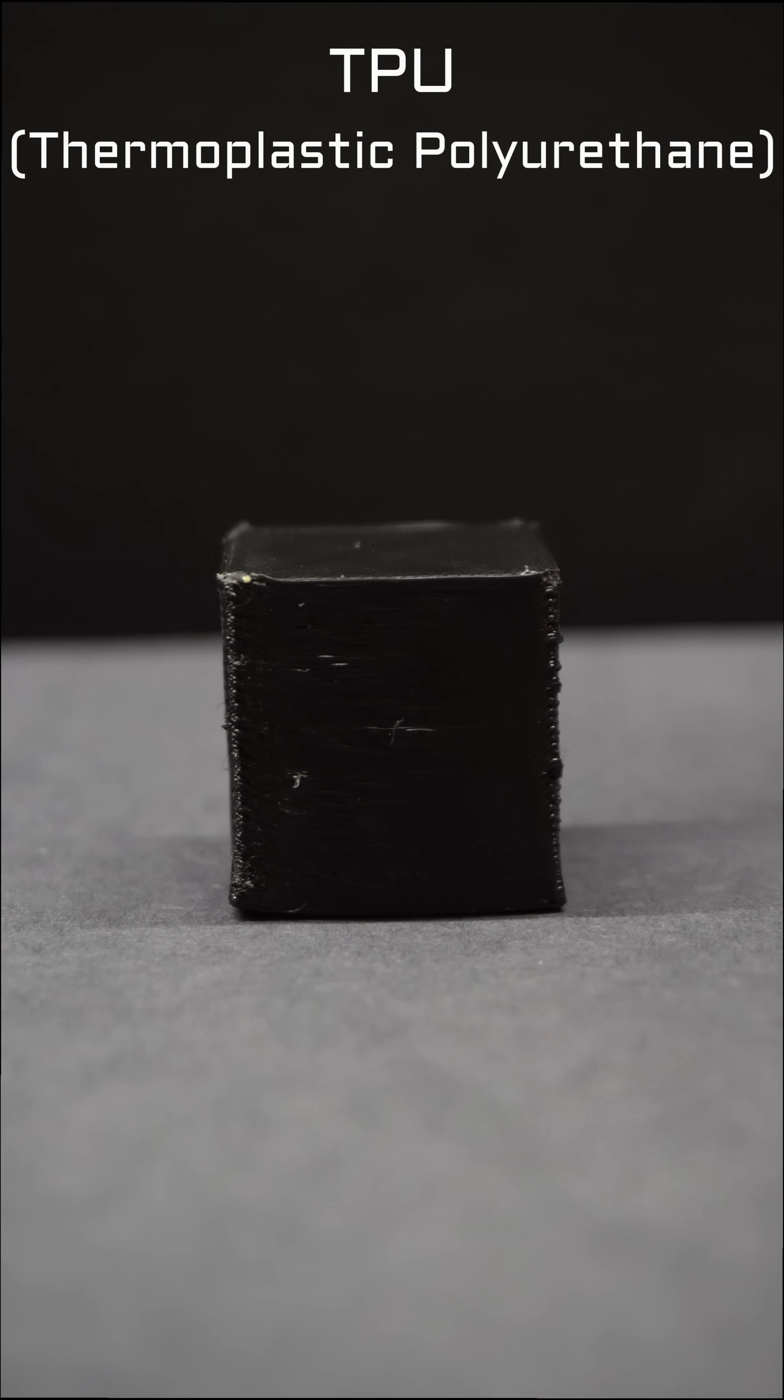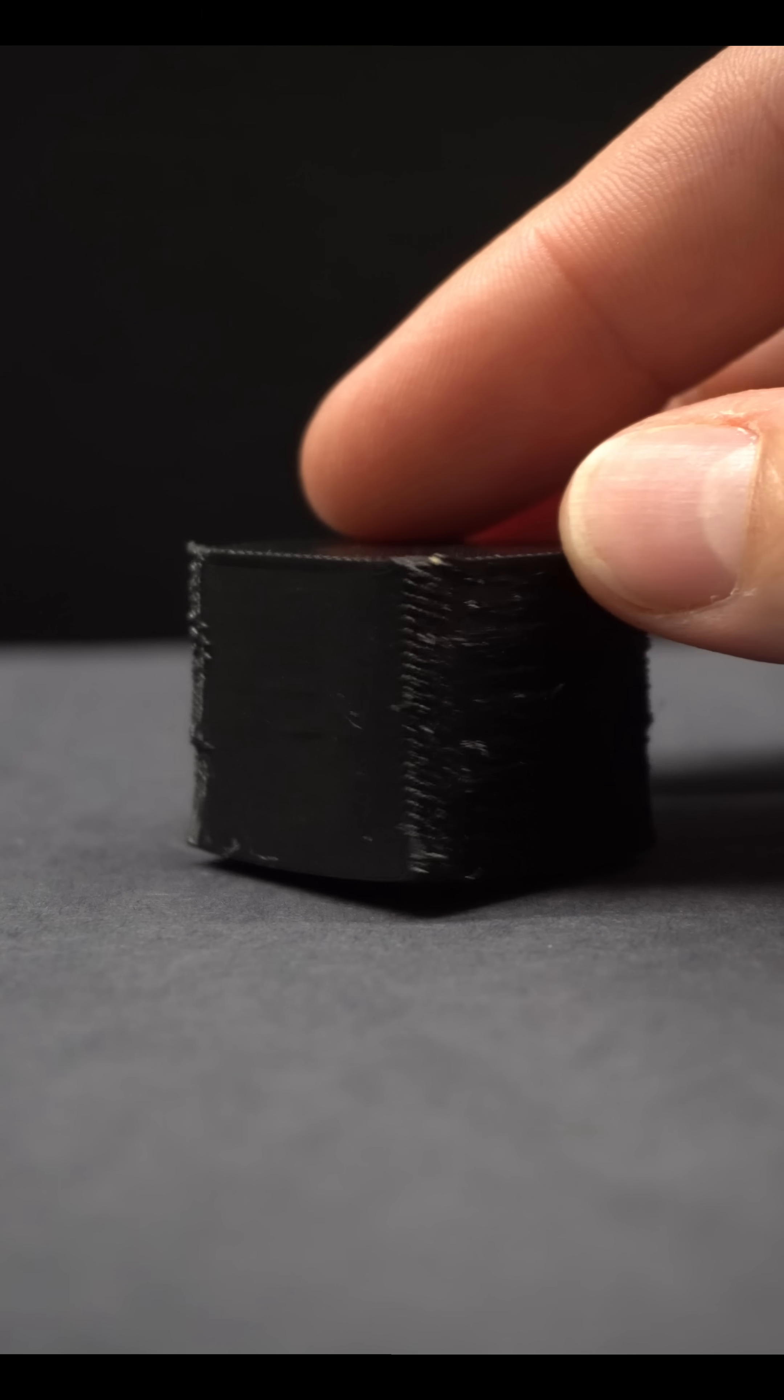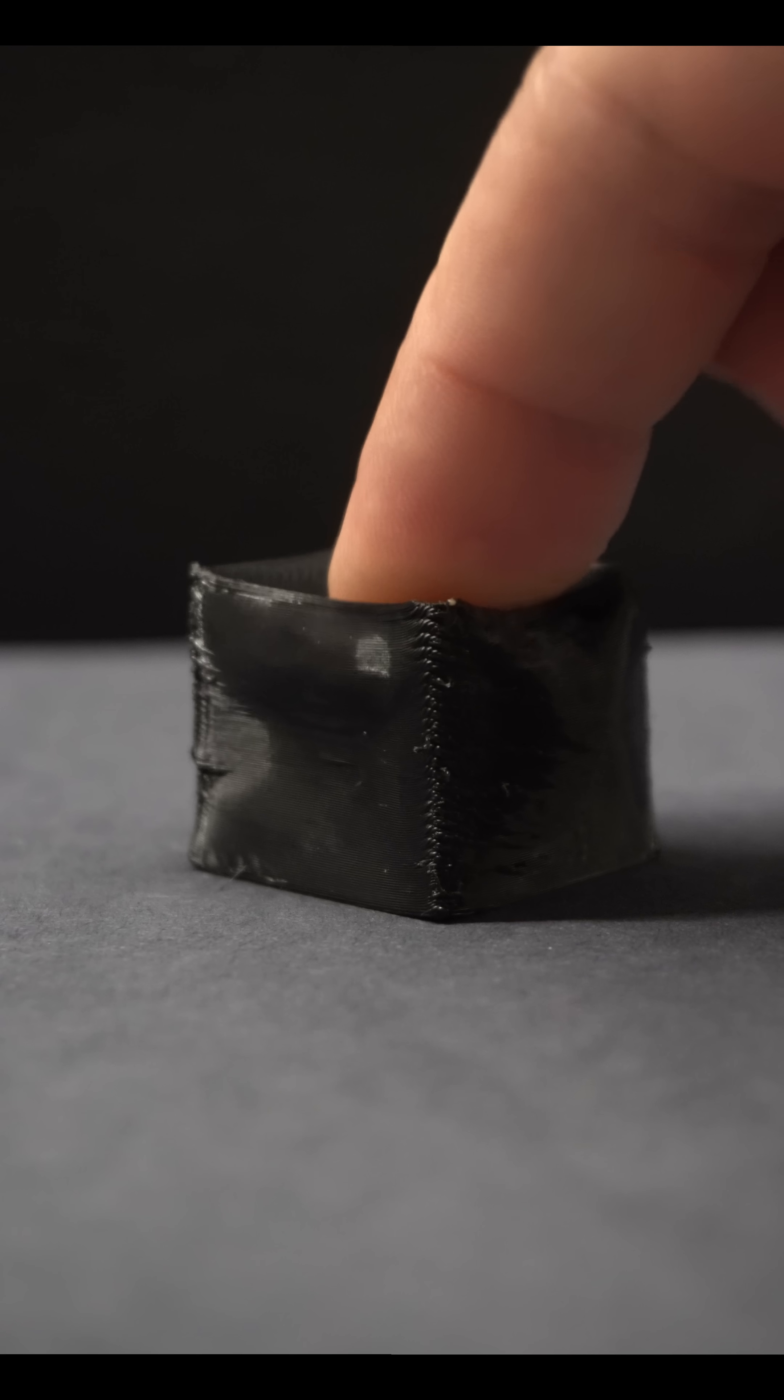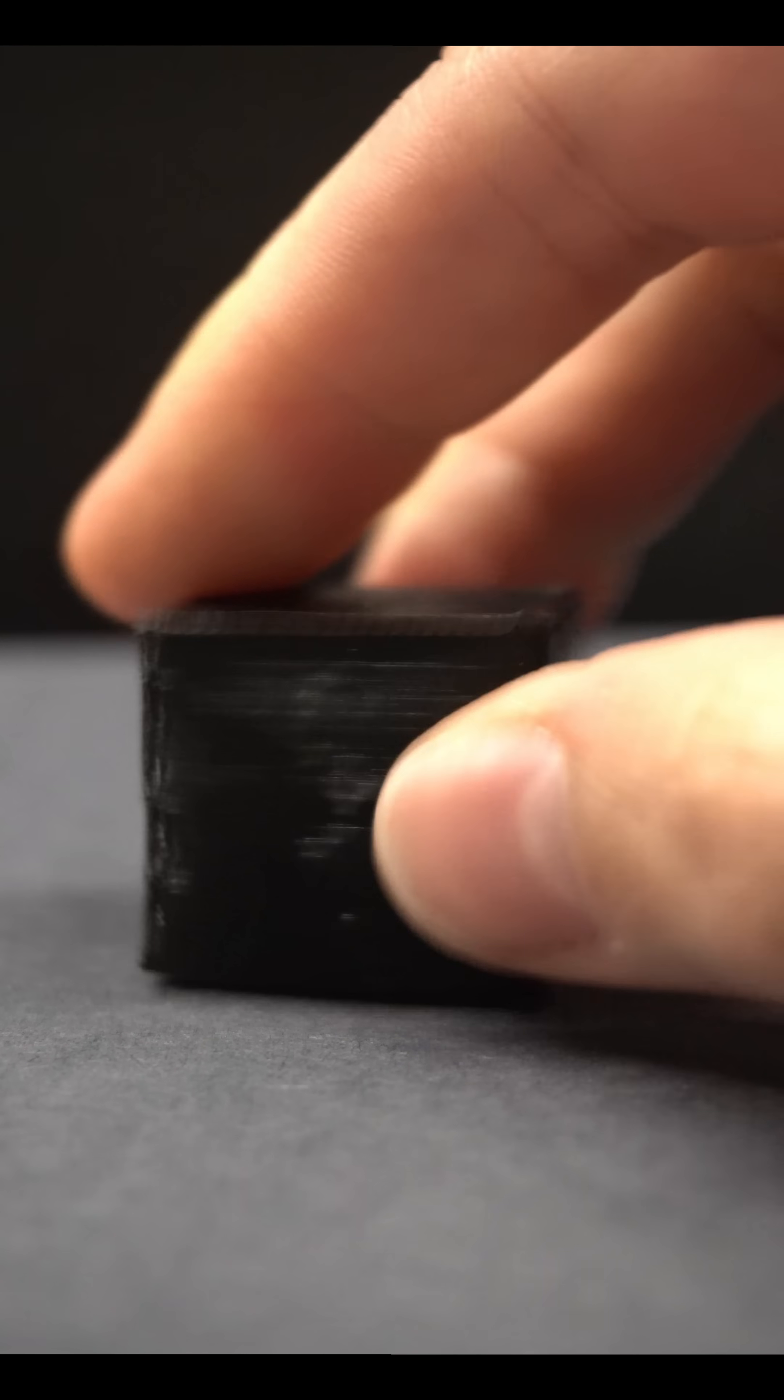TPU, thermoplastic polyurethane. It's like PLA but can flex and it's clearly harder to print with than PLA. Especially when you're too lazy to adjust your printer settings.